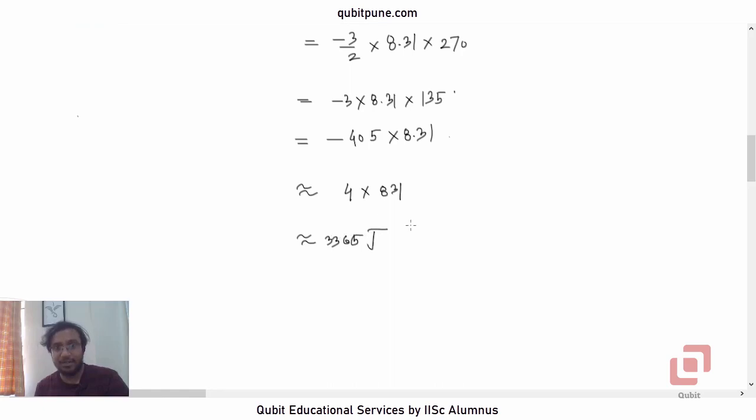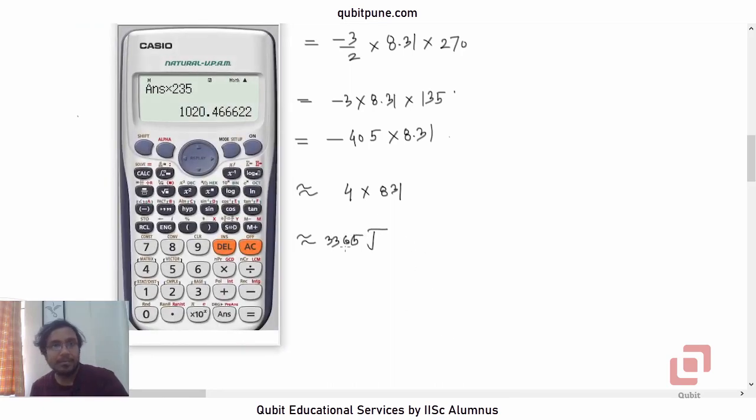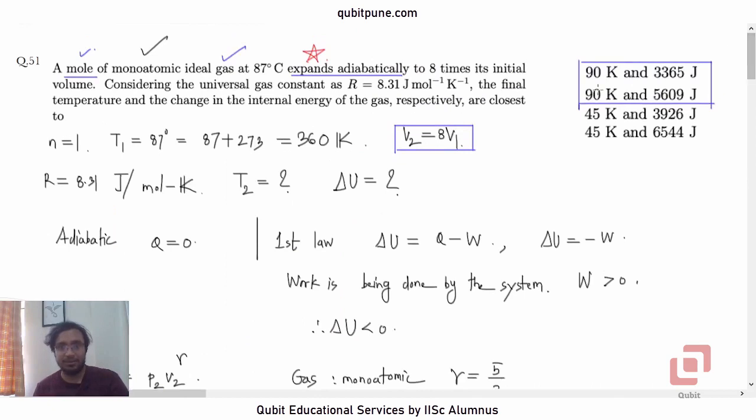Let us verify this on calculator. We have 3 × 8.31 × 270 divided by 2. Yes, that is 3365.55, so our answer is correct. So the right option is option A: 90 Kelvin and 3365 joules.